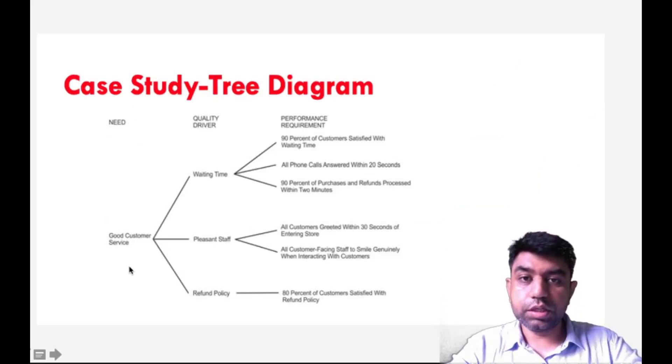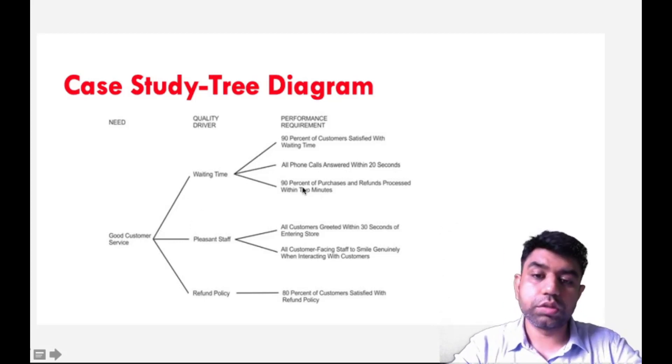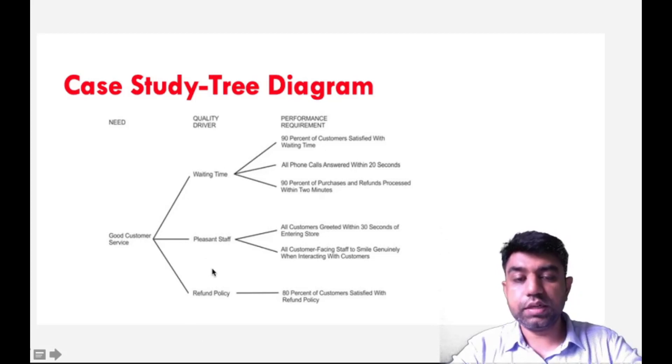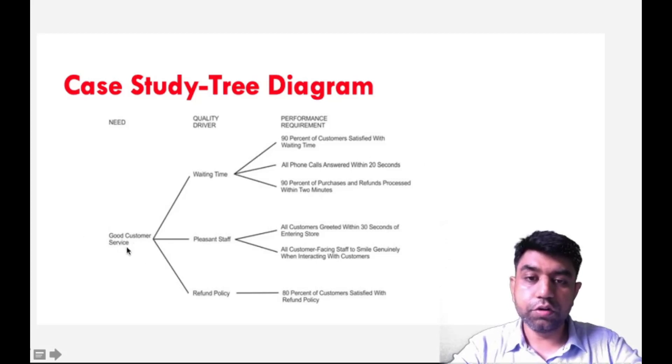Let us take an example. Suppose the need of the company is to have good customer service. What are the things need to focus on? The waiting time, listen to customers, and refund policy. For each and every task, what are the performance requirements? For waiting time, 90% of the customers satisfied with the waiting time, all phone calls answered within 20 seconds. Then you can get better service or satisfy your customer. Performance requirements will be shown in the sub branches. The key drivers will be represented at the main branches, and the need will be lying at the top part of the tree. In this way you can achieve your goal. Write down your goal and go towards the in-depth analysis of the problem.